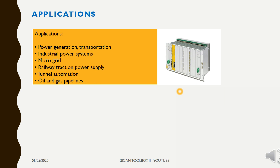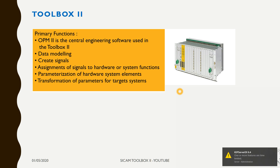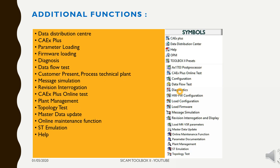Here we will talk about primary functions of Toolbox 2. OPM2 is the central engineering software. It is used for data modeling where you can create signals within process technique. After creating signals you can transform them into system technique — they will be assigned automatically within peripheral modules defined within the automation unit. There are some additional functions within the software. The data distribution center is used to import or export the backup with the engineering station.